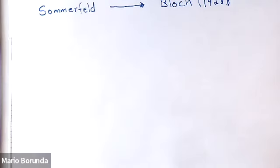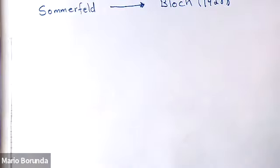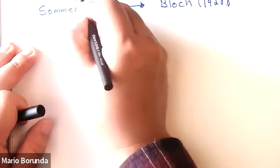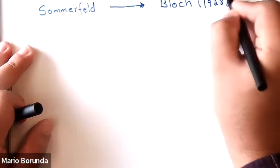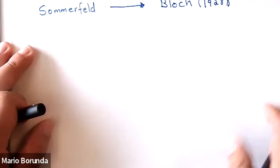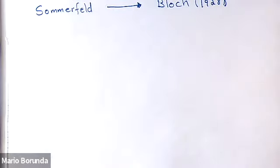The problem before was: why is the mean free path so long? Electrons were traveling through thousands of rows of atoms without hitting any of them. Once Bloch solved this problem, the question became: why is the mean free path so short, actually? So Sommerfeld had the free electron gas theory; Bloch had the electron gas in a periodic potential — small modifications to the first problem, and now you can explain almost everything.